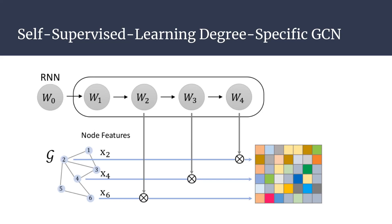To phrase it more precisely: you have trainable parameters as input to the RNN, and the RNN outputs a set of weights for each degree — first output for degree-one nodes, second state for degree-two nodes, and so on. These weights are then used in the GNN. This means weights for degree one also contribute to the output for degree two, but not directly — that is why the sets are not exclusive.